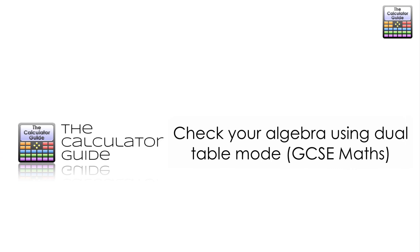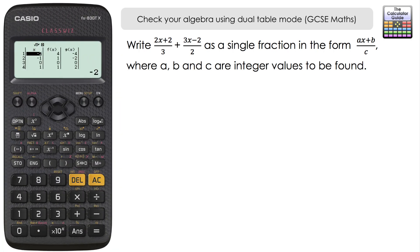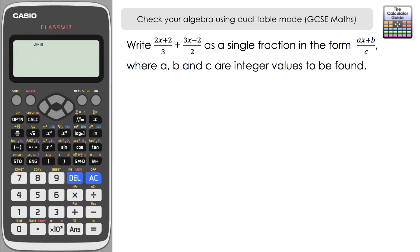Hello and welcome to the Calculator Guide video on checking your algebra using dual table mode, with a focus on GCSE mathematics. We're going to use the dual table function — the table mode that has an FX and a GX — on a Casio ClassWiz. I'm doing this on an FX-991EX, although if you have the FX-83 or 85 GTX or other ClassWiz models, you may also have the two-function table mode and will be able to follow along.